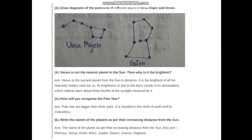Draw a diagram of the position of different stars in Ursa Major and Orion. You can draw very easily to see your textbook. Next, number four: Venus is not the nearest planet to the sun. Then why is it the brightest?